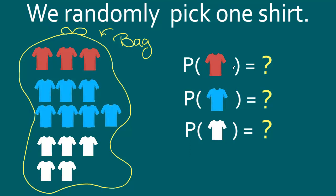The questions are: what is the probability that we pick a red t-shirt? Second, what is the probability that we pick a blue t-shirt? And finally, what is the probability that the t-shirt we pick is a white one?